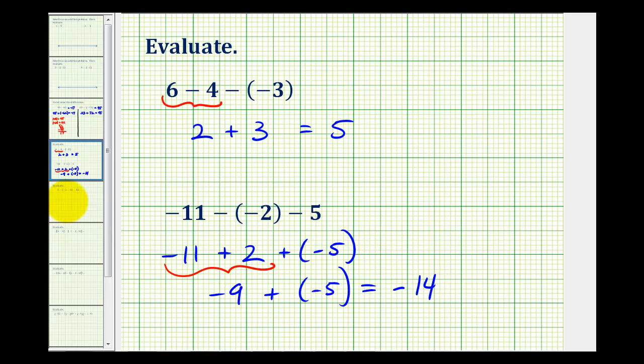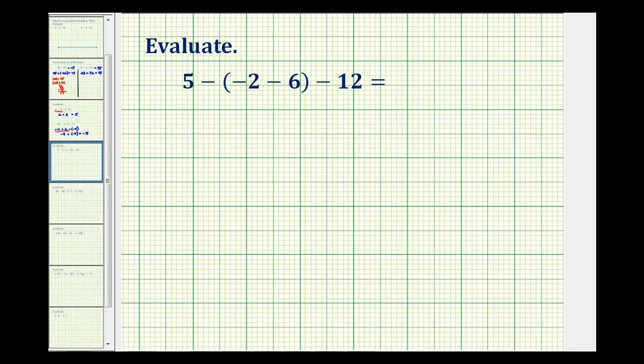Let's take a look at our third example. In this step, following the order of operations, we should simplify the innermost parentheses first. So we should simplify negative two minus six first, which we can rewrite as negative two plus negative six. So negative two plus negative six would be negative eight.